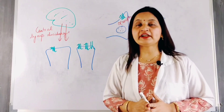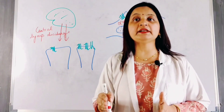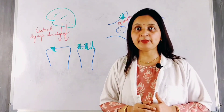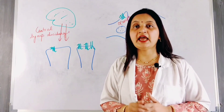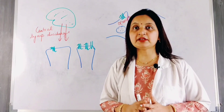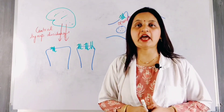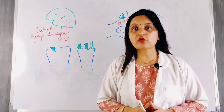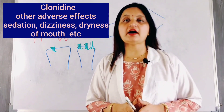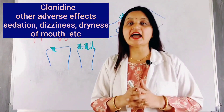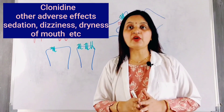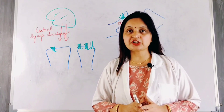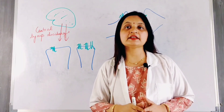Thus, sudden withdrawal of clonidine causes rebound hypertension because of the large release of epinephrine and norepinephrine into the circulation and an increase in the number of receptors that respond to their action. Other adverse effects of clonidine due to central action are sedation, dizziness, nightmares, and dryness of mouth and nose due to the antisecretory action caused by the central effect.